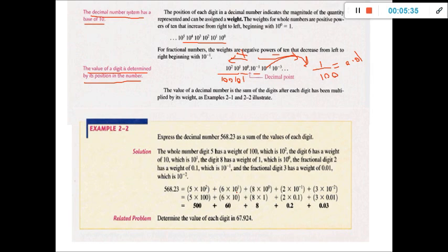Now let's take an example: express the decimal number 568.23 as the sum of the values of each digit. So 8 is multiplied by 10 to the power of 0, 6 is multiplied by 10 to the power of 1, and 5 is multiplied by 10 to the power of 2. What about 2? It will be multiplied by 10 to the power of minus 1, and 3 by 10 to the power of minus 2.